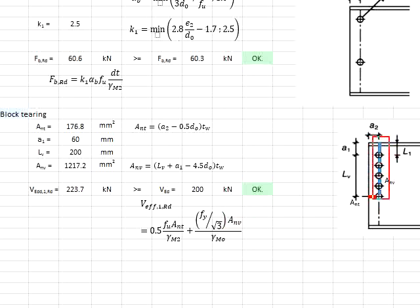The area of the shear plane here is calculated by having the a1 plus the lv minus 4.5 times the bolt diameter times the thickness of the web, which is 6.8 mm, that gives you 1217.2 mm square.